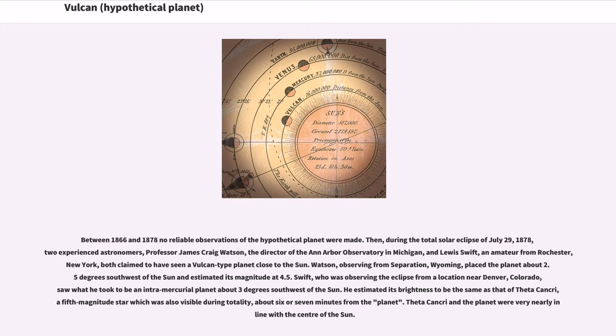Watson, observing from Separation, Wyoming, placed the planet about 2.5 degrees southwest of the Sun and estimated its magnitude at 4.5. Swift, who was observing the eclipse from a location near Denver, Colorado, saw what he took to be an intramercurial planet about 3 degrees southwest of the Sun.